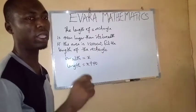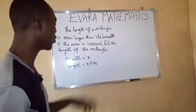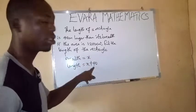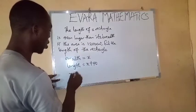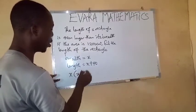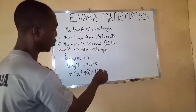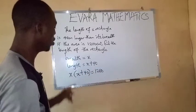Area of the rectangle is length times breadth. So that means if we multiply this by this, it will give us 1,200. x multiplied by x plus 40 is equal to 1,200.